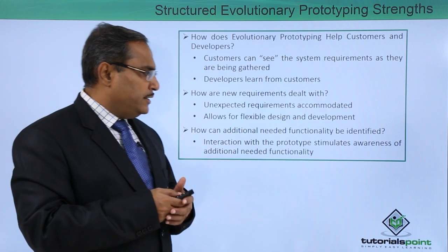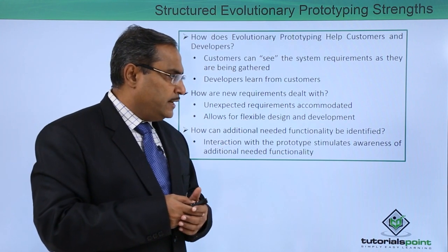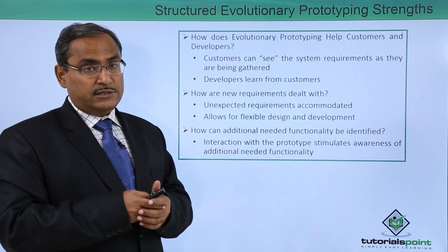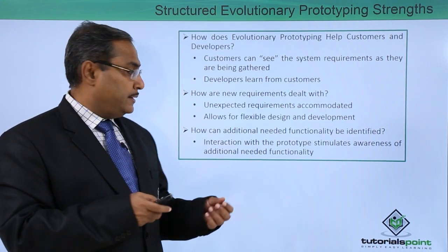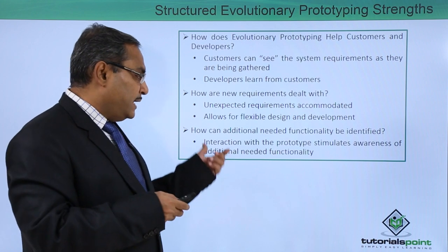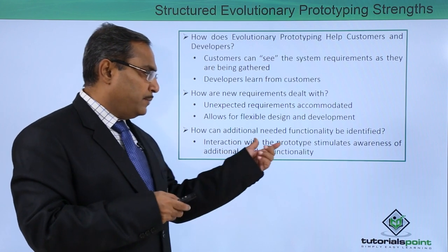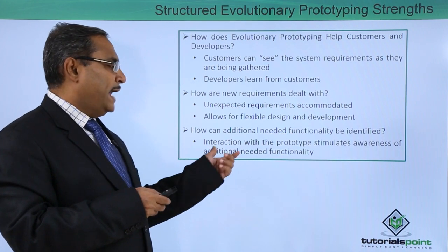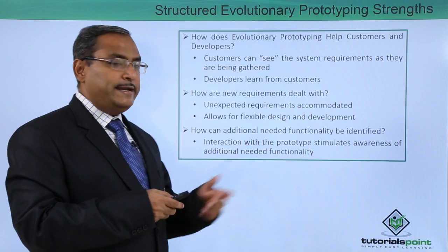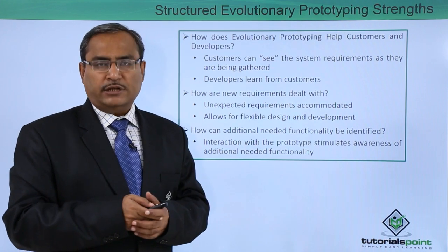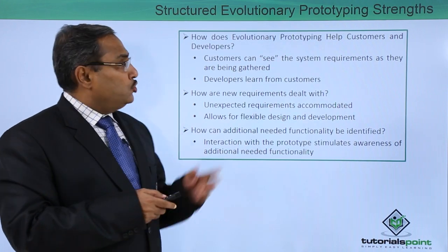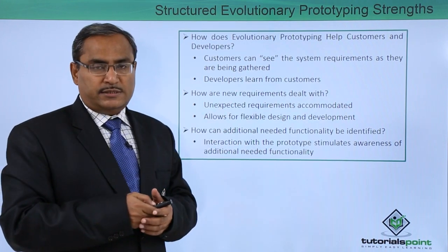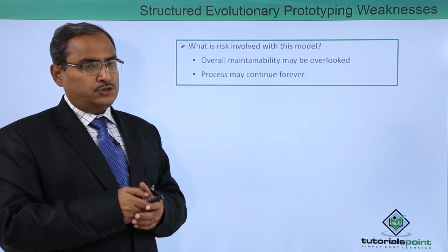How can additional needed functionality be identified? The answer is: interaction with the prototype creates simultaneous awareness of the additional needed functionality. These are the respective strengths of this prototyping model.